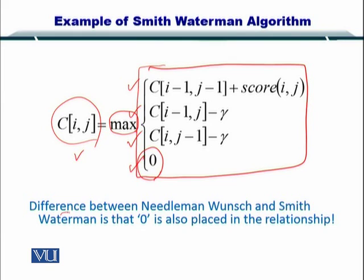And you have to compute the maximum of these four towards computing C_IJ. So as I just mentioned, the difference between Needleman-Wunsch and Smith-Waterman is that zero is also placed in the relationship.